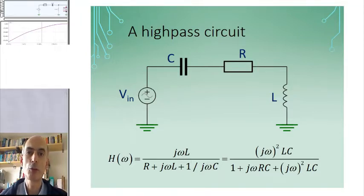If we take the output as the voltage across the inductor in a circuit like this, then we get the frequency response shown. This time you can see we've got two zeros at zero hertz, as we've got a term in jω squared in the numerator, and the denominator is exactly the same as it was before.